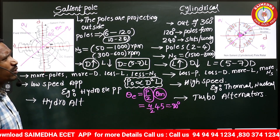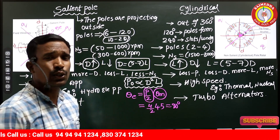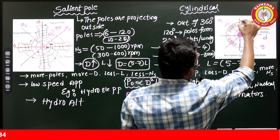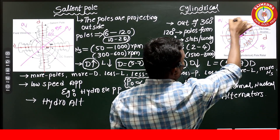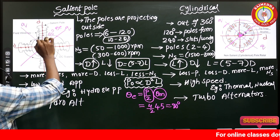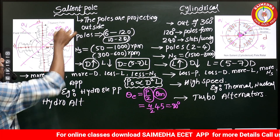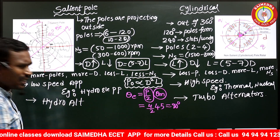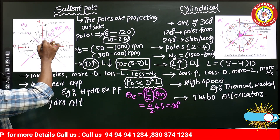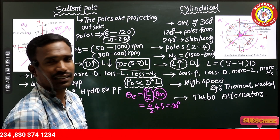Now, in both cases, consider which machine has a uniform air gap. Here the stator will be there like this. In the salient pole case, if this is the stator, the air gap length along the q-axis is much greater than the air gap length along the d-axis — non-uniform. But in the cylindrical case, the air gap length is uniform.